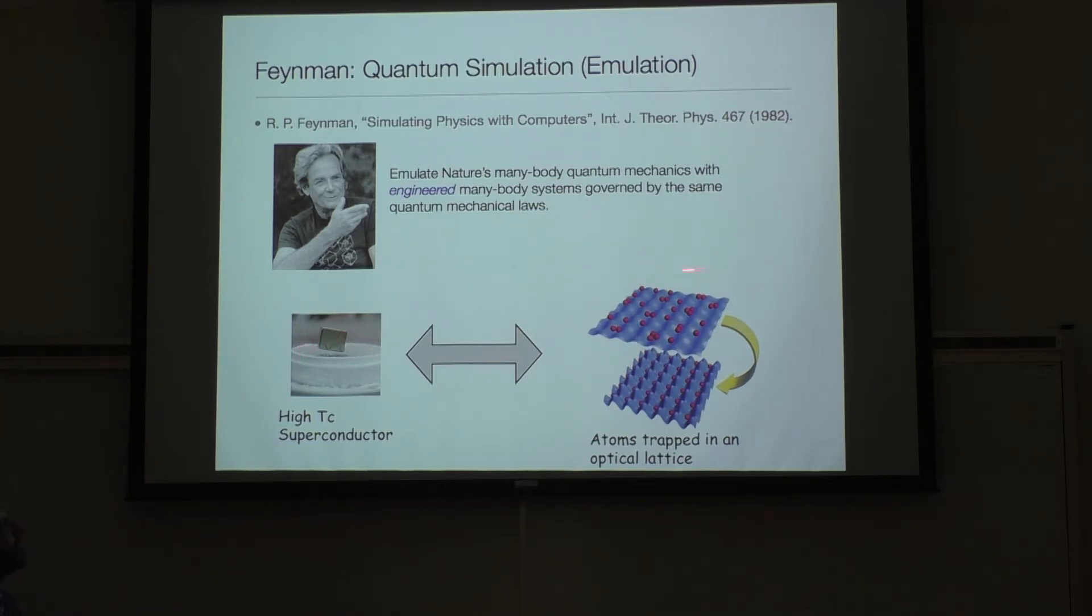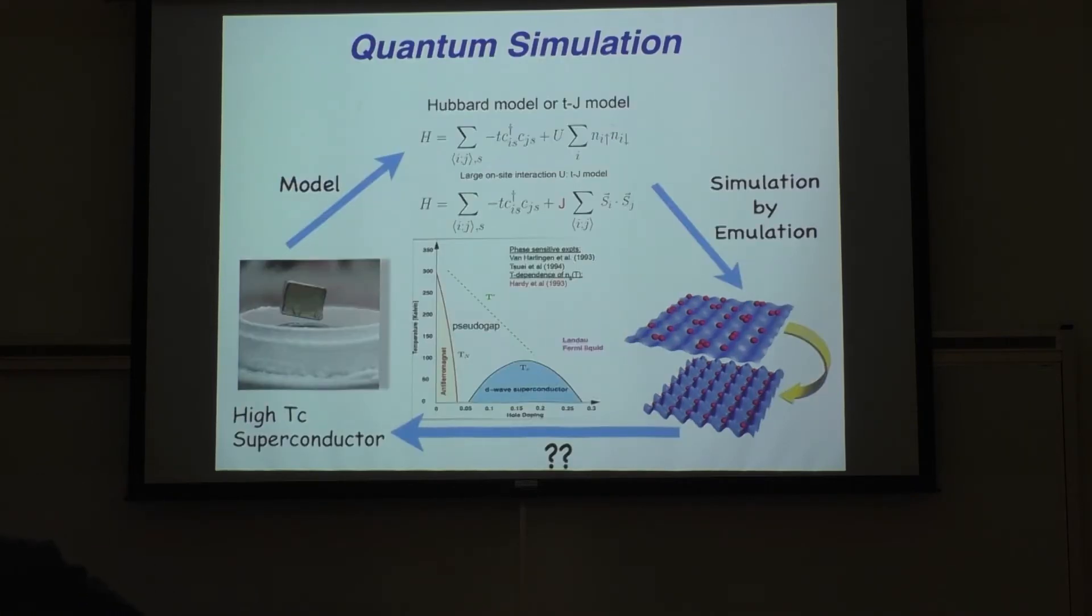The idea here might be, I want to, for example, understand the mechanism of high temperature superconductivity. What I'm going to do is have some engineered quantum system, maybe based on ultra-cold atoms that I can trap, and have that system, in some sense, help me solve what's going on here. This is the idea of what's called quantum simulation. How well can they fix their idea of their pure quantum system? Well, that depends on what platform I'm talking about.